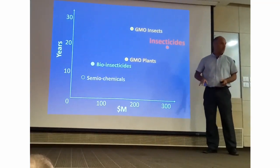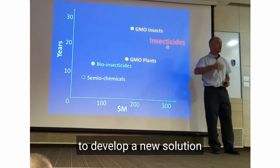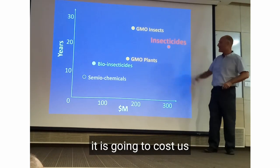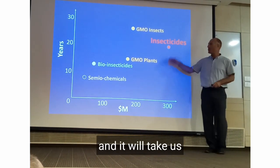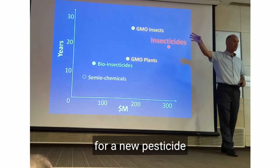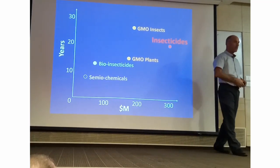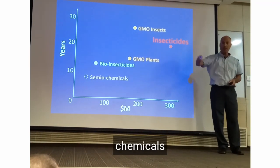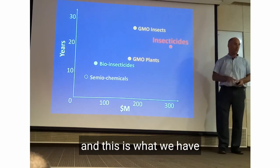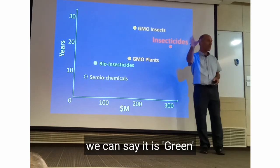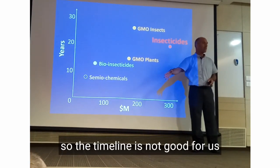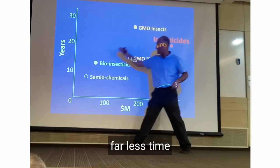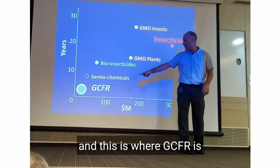To sum up: today, when we want to develop a new solution — and most of it is insecticides — it will cost around 300 million dollars and take around 20 years for a new pesticide. It's a very long time, costs a lot of money, and no one really wants sprays or chemicals of any kind. The timeline is not good for us, and the cost is not good for us. What we're looking for is something that will take far less time and money — and that's what GCFR is.